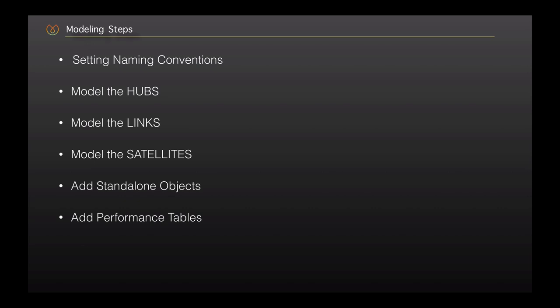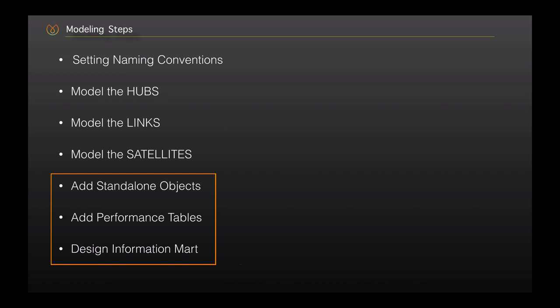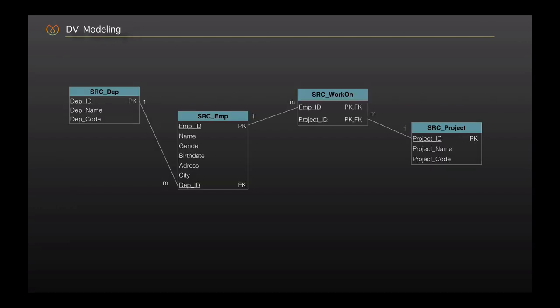The final step is the creation of the information mart — meaning a dimensional model or data mart for your reporting requirements. The last three steps are optional because it totally depends on your business needs and performance expectations on the system. Also, as Data Vault supports incremental extension and development of the model, you can start small with a couple of tables and extend it with further tables iteratively. Now we will design a quick model including the steps we have learned so far.